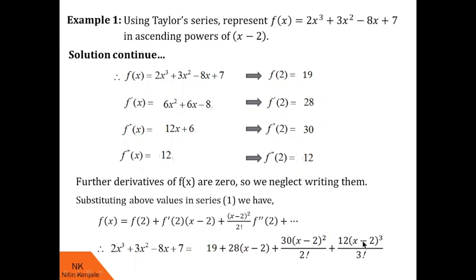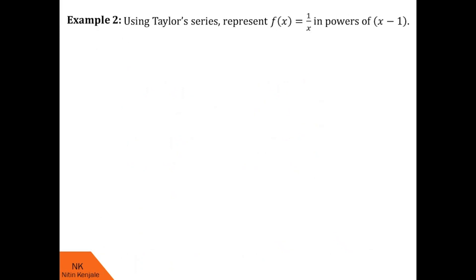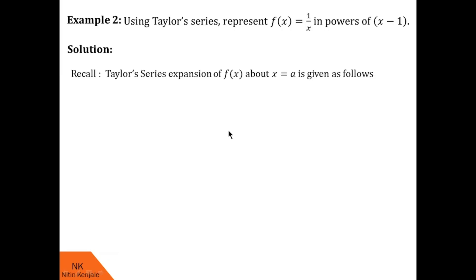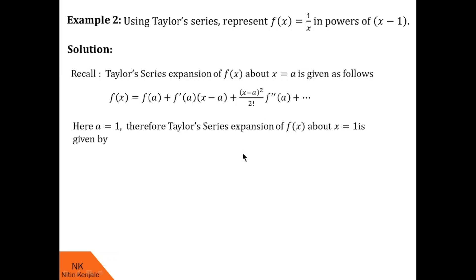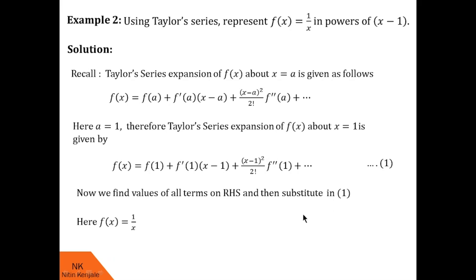Now let me proceed to the second example. Here we are asked to use Taylor series to represent f(x) = 1/x in powers of x - 1. Since we expand in powers of x - 1, a is 1. The Taylor series about x = 1 is: f(1) + f'(1)(x - 1) + (x - 1)²/2! · f''(1) and so on. We label this series 1 and find the unknown values.